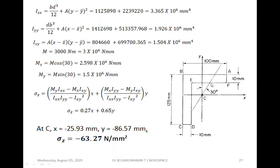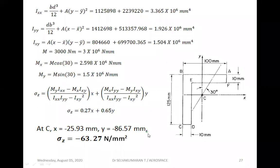Since the bending moment produces tension in the first quadrant — both Mx and My are positive — the maximum direct stress due to bending will be induced at point C. Taking point C's coordinates: it is in the fourth quadrant, so both the x and y values are negative. Substituting these x and y values into the expression gives sigma_z = −63.27 N/mm² (approximately). This is the maximum stress induced.